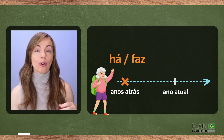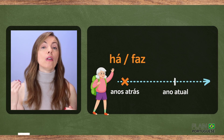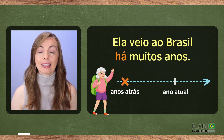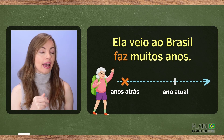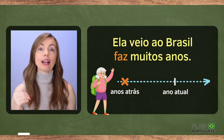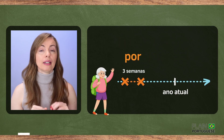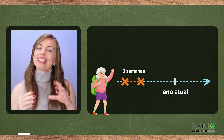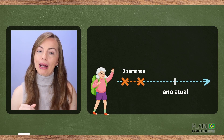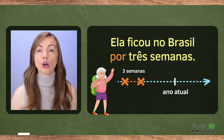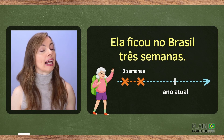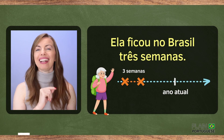So, when talking about past events, use há or faz to say how long ago they happened: Ela veio ao Brasil há muitos anos, or faz muitos anos. But use por — or omit it — to say for how long something happened in the past: Ela ficou no Brasil por três semanas, or Ela ficou no Brasil três semanas.